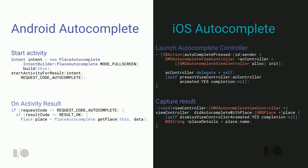On iOS it's very similar. On the autocomplete button press, I start a GMSAutocompleteViewController, which presents the UI. When the user types something and selects a place, it calls back with didAutocompleteWithPlace, and from that I pull the place details — for example, a string with the place name itself. Very straightforward, very simple code.